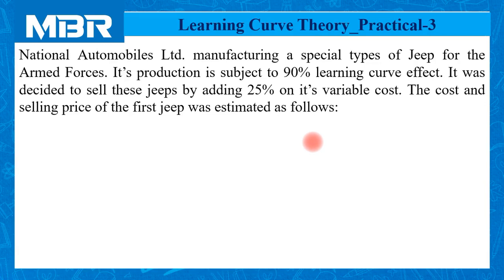National Automobiles Limited manufactures special types of Jeep for the armed forces. Its production is subject to a 90% learning curve effect. The effect of the learning curve is clearly mentioned that it is applicable at the rate of 90%. It was decided to sell these Jeeps by adding 25% on its variable cost. The cost and selling price of the first Jeep was estimated as follows.